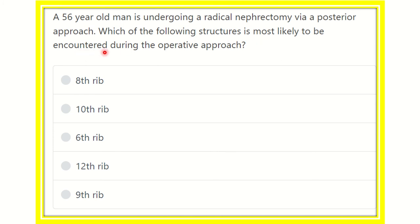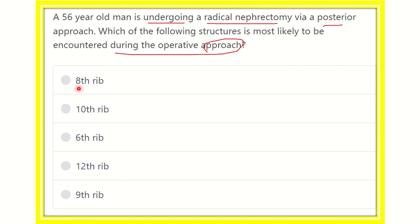In this question, the patient is undergoing a radical nephrectomy — the kidney is being removed via a posterior approach — and we need to identify which structure is encountered during this operative approach. The options are: 8th rib, 10th rib, 6th rib, 12th rib, and 9th rib.